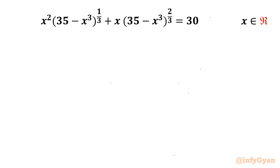Welcome to InfiGyaan friends. In this video we are going to solve one very interesting and challenging Olympiad problem: x squared times (35 minus x cubed) to the power 1 over 3, plus x times (35 minus x cubed) to the power 2 over 3, equal to 30. We have to find out all real solutions.